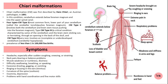Chiari malformation is a condition where parts of the brain, particularly the cerebellum, extend into the spinal cord through the foramen magnum. This can put pressure on the spinal cord and brain stem, potentially causing a variety of neurological symptoms.